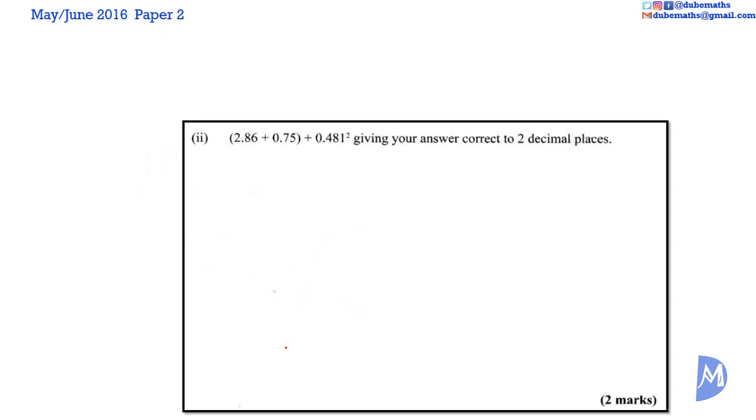Part 2. BODMAS says we work out the brackets first, then the order which is the powers second, and then we add later on. So to do the addition, 2.86 added to 0.75.